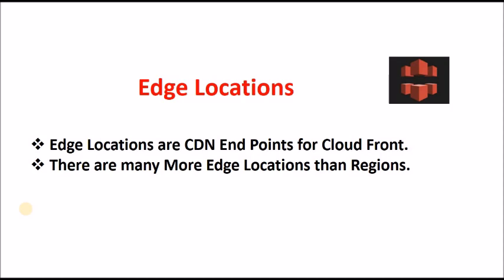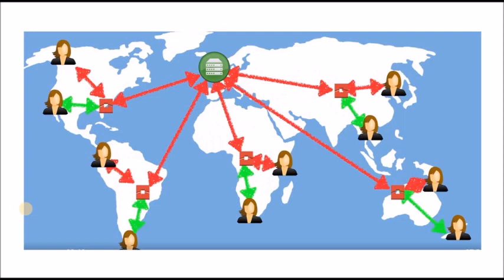We also have edge locations. Edge locations are nothing but content delivery network endpoints for CloudFront. For example, if I have a bucket in London and I am accessing it from India, it will take some time to hit the London server. So AWS came up with edge locations, shown in red. When I request an S3 bucket URL, it checks whether the content is cached in the nearest edge location. If not found there, it goes directly to London and the content is then cached and stored in that edge location.